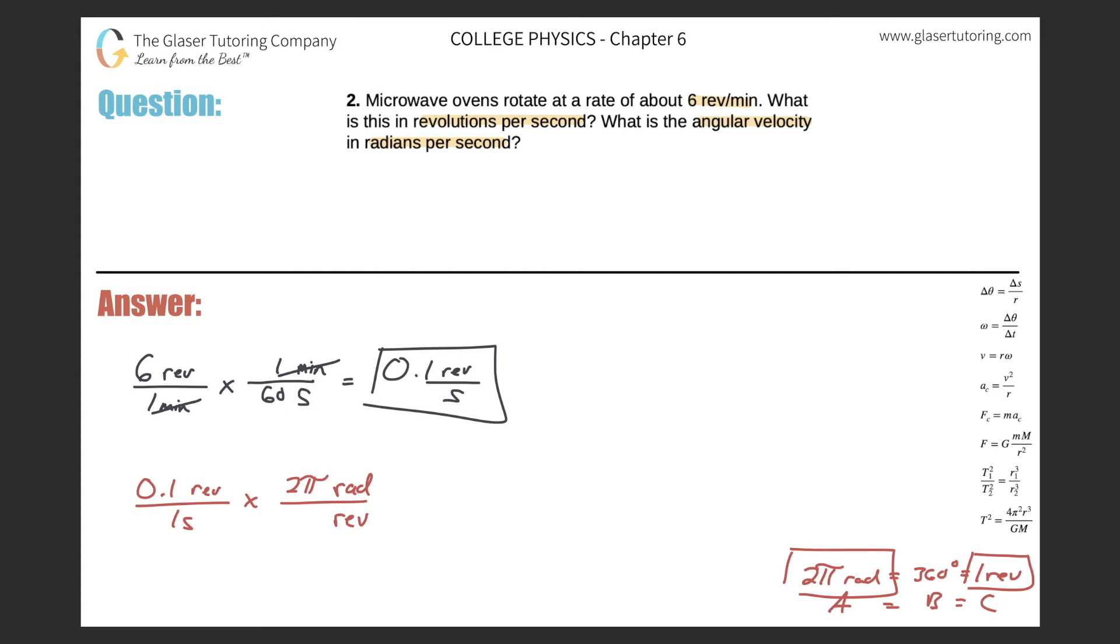I'm going to place 2π radians per one revolution. So I notice now the revolutions cancel. Now this would simply be—you can leave it in terms of π, it doesn't really matter—but why don't we just calculate it out to get a decimal value? So do 0.1 times 2 times π, and it works out to be...